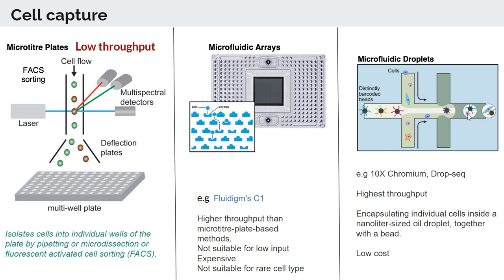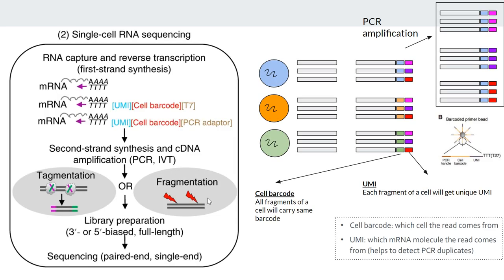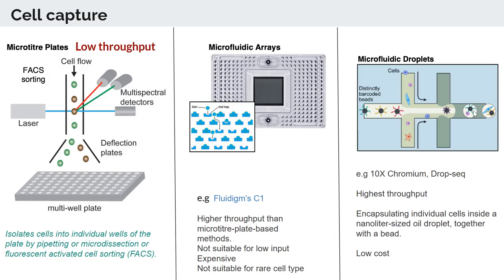Once the cell is captured in the droplet, the next step — as in 10x Genomics — is to break the cell, extract the RNA, and have the RNA molecules bind to the barcode on the bead. Then sequencing occurs. In the cell preparation step, we attach the cell barcode and also add a UMI (unique molecular identifier), which is another unique sequence added to the fragment before sequencing.